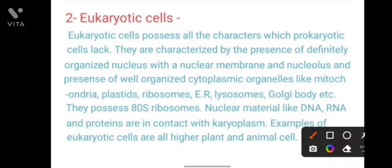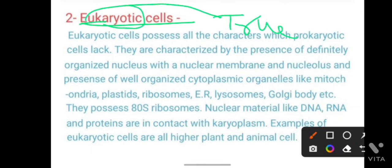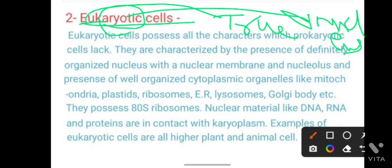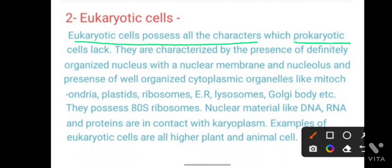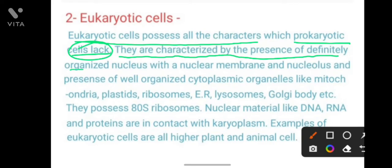The next type of cell is the eukaryotic cell. 'Eu' means true, and 'karyon' means nucleus. So the eukaryotic cell has a true nucleus. In the prokaryotic cell, the nucleus was not well developed, but the eukaryotic cell possesses all the characters which the prokaryotic cell lacks — it is a well-developed cell.